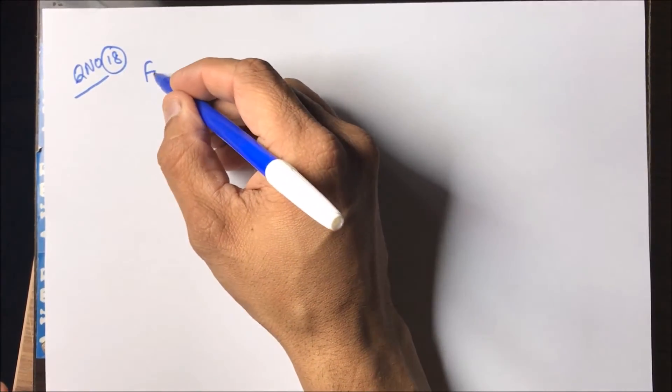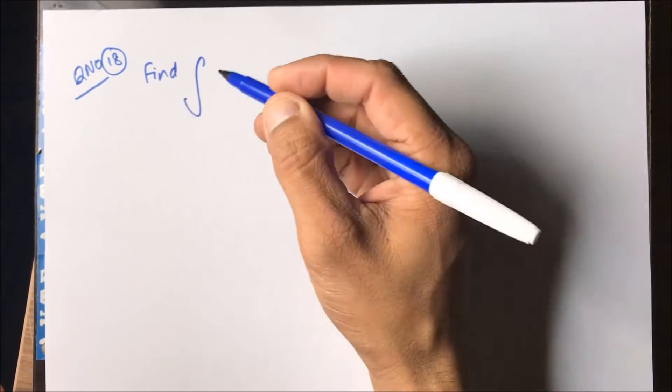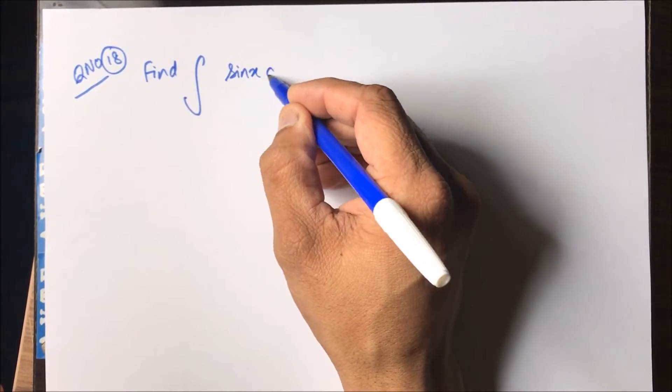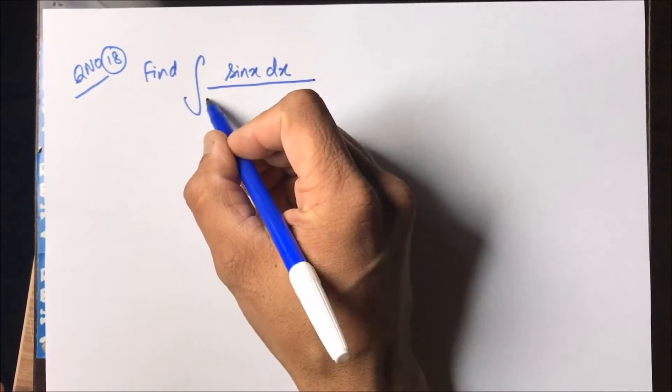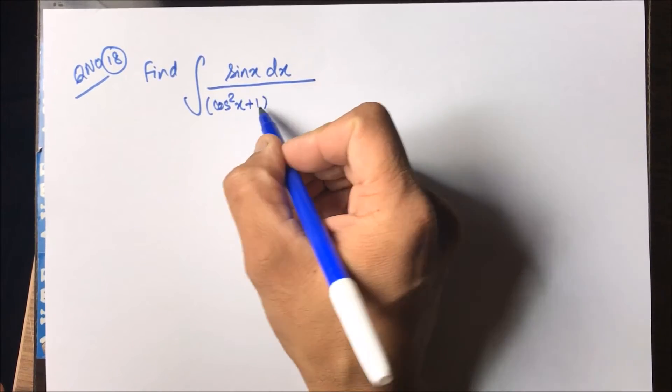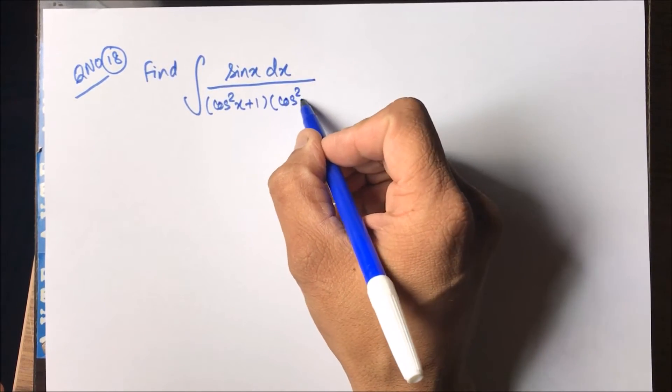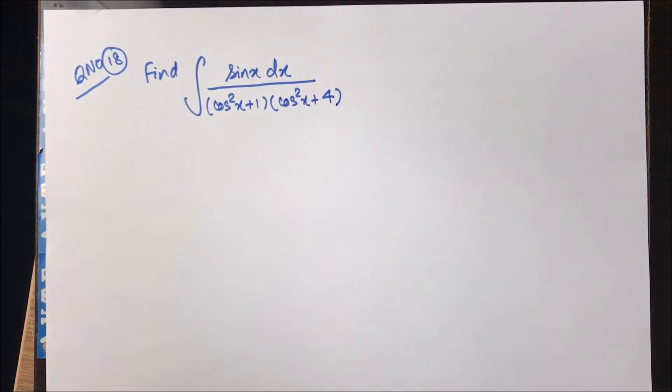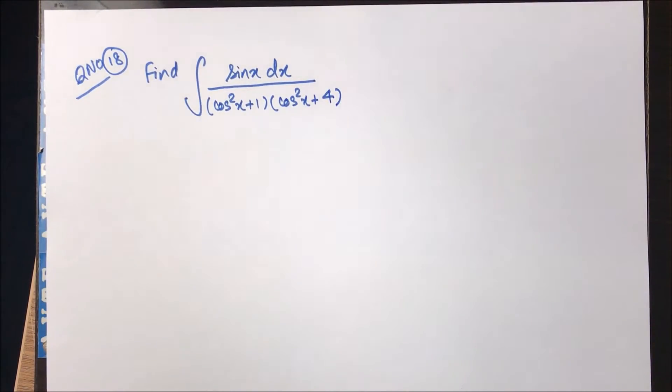The question is find, evaluate, that is find the integration of sine x dx upon cos square x plus one into cos square x plus four.